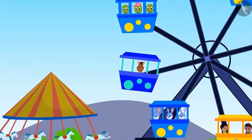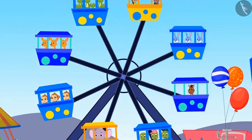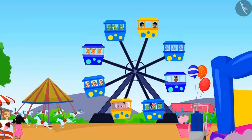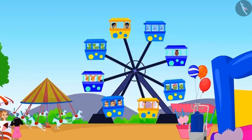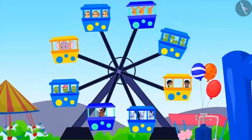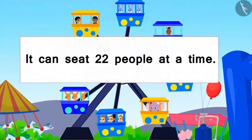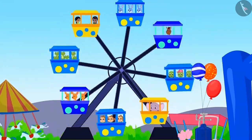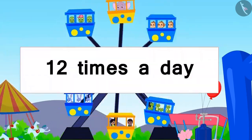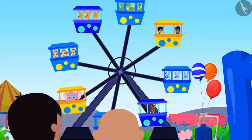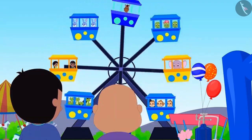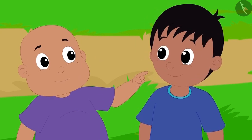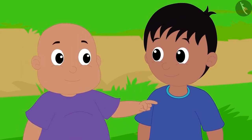Everyone has gone to the fair. The fair has a variety of entertainment. There is a huge Ferris wheel in the fair. This Ferris wheel can seat 22 people at a time. The Ferris wheel operates 12 times a day. Raju and Bablu are looking at this Ferris wheel. Raju asks Bablu, how many people can sit in this Ferris wheel in a day?